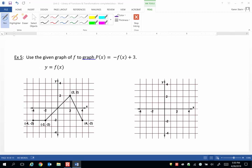So let's list the transformations. Well first, -f(x) means that we're going to reflect over the x-axis. That's a vertical reflection. And then the +3, which is on the outside of the grouping symbol of the function notation, means we're going to shift up 3 units. So we have two transformations.